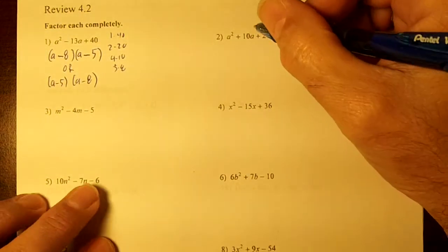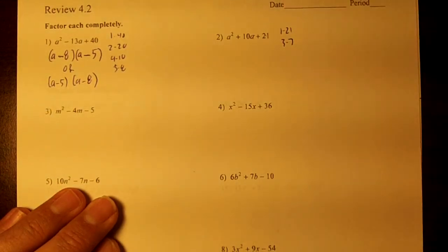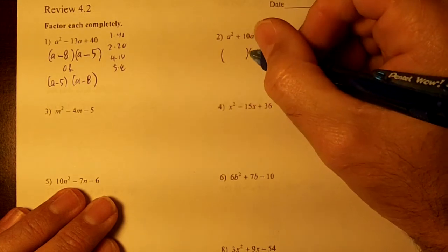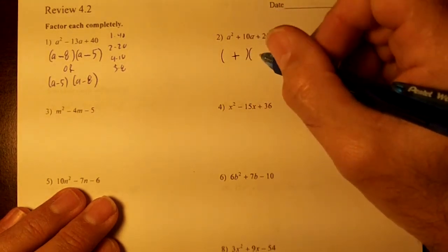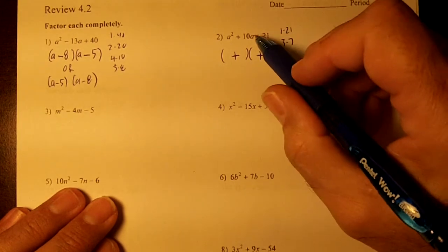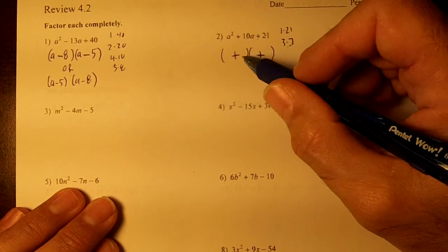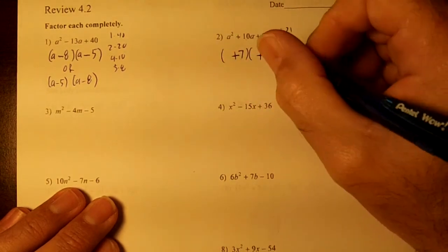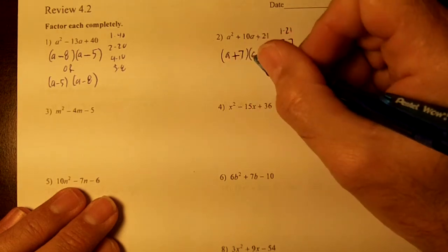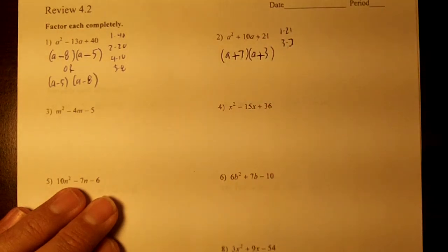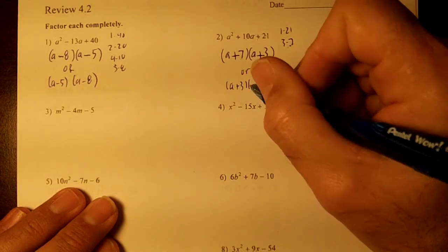Number 2. Write down your factors of 21. You only have two of them. Draw your parentheses. Drop the plus. This means the signs are the same, we're going to add. We want to add and get 10. Which one's adding and gets 10? It's the 3 and the 7. Put the 7 first, the 3 last. In case you subtract, you want your largest number here. So we have A plus 7 times A plus 3, or you could have A plus 3 times A plus 7.